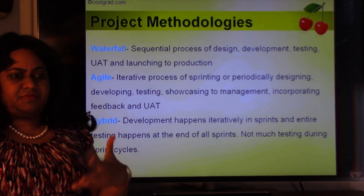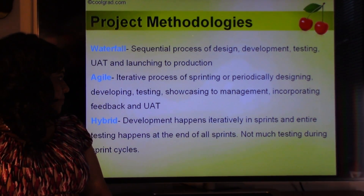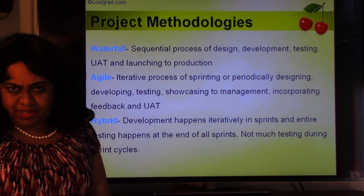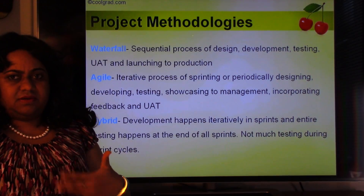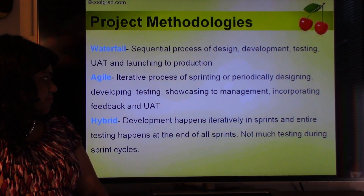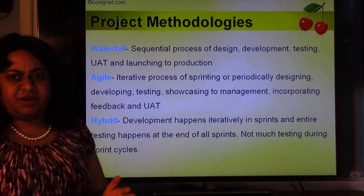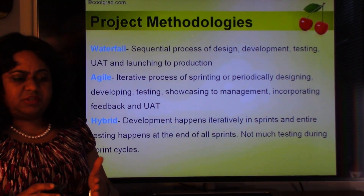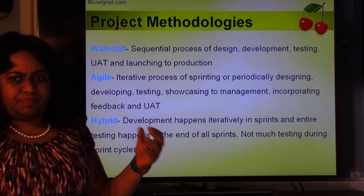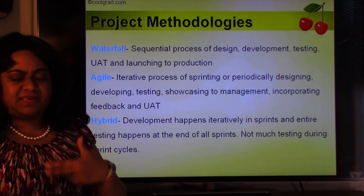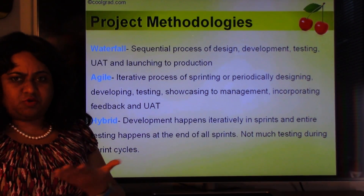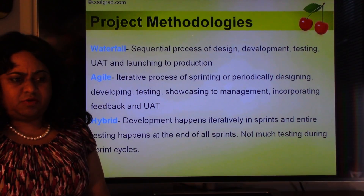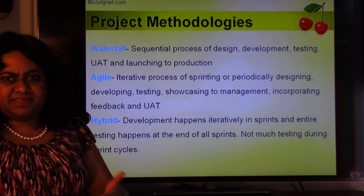Agile methodology is a recently developed methodology that is all iterative — the entire project implementation is done in cycles. There is periodic showcasing and periodic incorporation of feedback from the product owners. In an Agile project, there is something called a sprint, which can be one, two, three, or four weeks long. In one sprint, the team does some design, some development, some testing, and showcasing. At the end of the sprint, there is a demo to the business team so they can review, incorporate feedback, and make changes. The project is done iteratively — iterative development, iterative testing, and iterative showcasing.